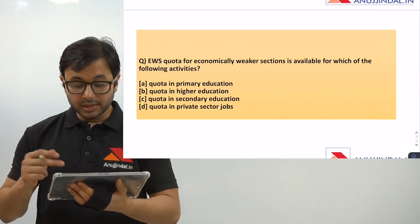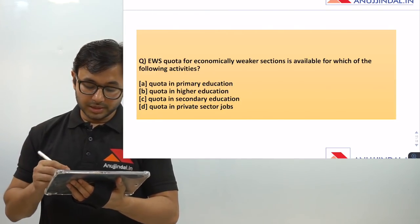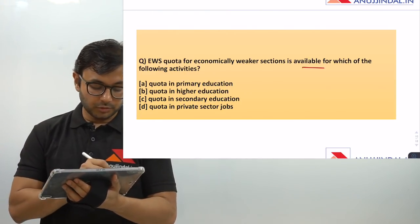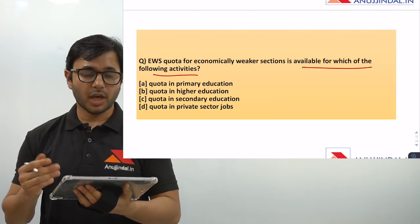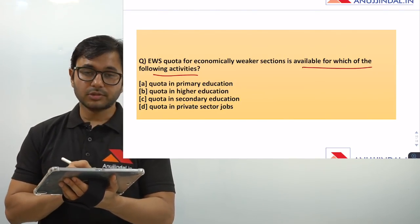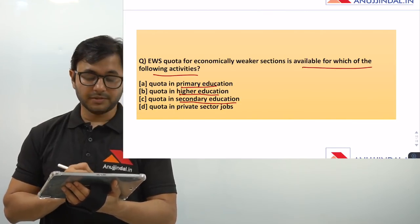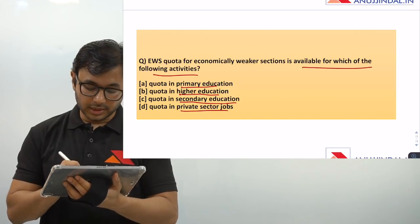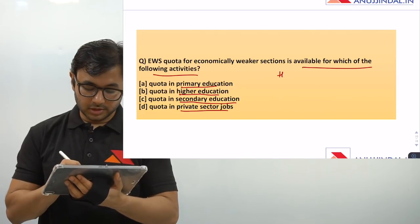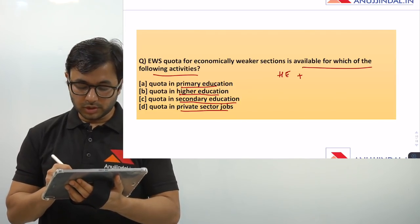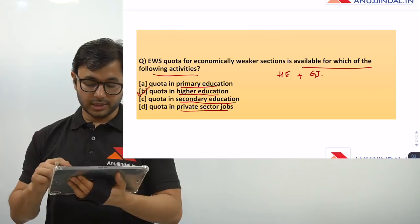Let's come to the next question. A very interesting, simple yet difficult question: EWS quota — economically weaker sections quota — is available for which of the following activities? The options are: quota in primary education, quota in higher education, quota in secondary education, and quota in private sector jobs. The answer is that EWS provides quota or reservation for two categories: number one, higher education, and number two, government jobs.